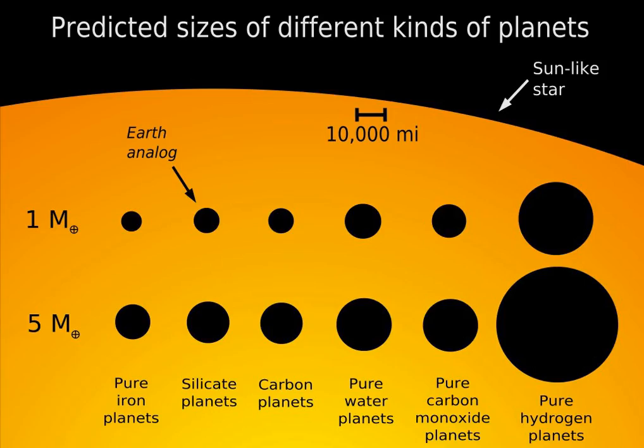Iron is the sixth most abundant element in the universe by mass after hydrogen, helium, oxygen, carbon, and neon. There are also theorized helium planets and carbon planets.